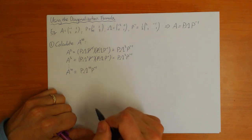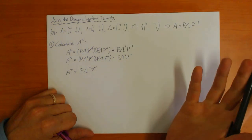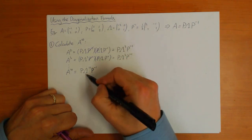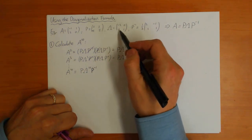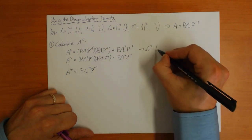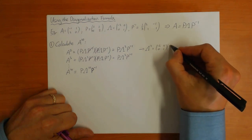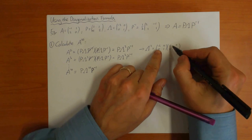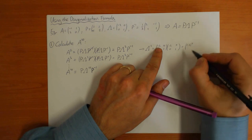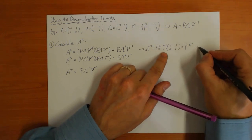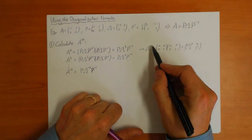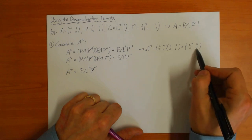You've just replaced one power of 10 by another, but the reason this is useful is that it's very easy to calculate the powers of a diagonal matrix. For example, Lambda squared is just minus 2 squared in the top-left and 1 squared in the bottom-right, with zeros everywhere else. In other words, to square the diagonal matrix you just square each of its diagonal elements.